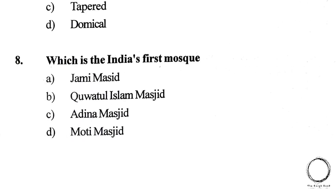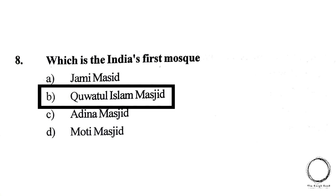Which is India's first mosque? A. Chami Masjid, B. Quwwatul Islam Masjid, C. Adina Masjid, D. Moti Masjid. The right answer is B, Quwwatul Islam Masjid.